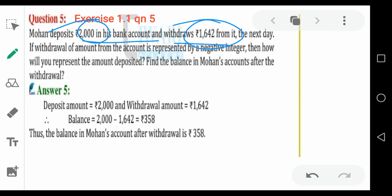If withdrawal of amount from the account is represented by a negative number, then how will you represent the amount deposited? That means withdrawal is represented by a negative number. How will you represent the amount deposited? It will be a positive number, right?